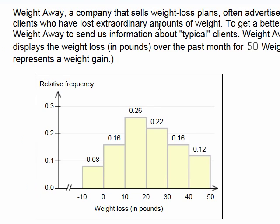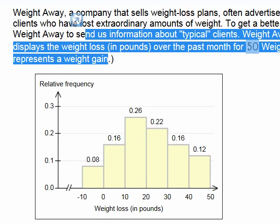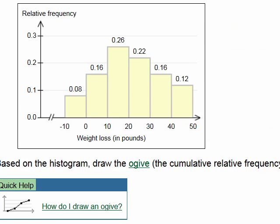Now let's look at the second problem. Wait Away is a company that sells weight loss plans, often advertising by highlighting stories of extraordinary weight loss. To get a better picture of typical results, we asked Wait Away for data on typical clients. They sent a histogram displaying weight loss in pounds over the past month for 50 clients — note that a negative value for weight loss represents weight gain. Based on this histogram, draw the ogive — the cumulative relative frequency polygon — for the Wait Away data.